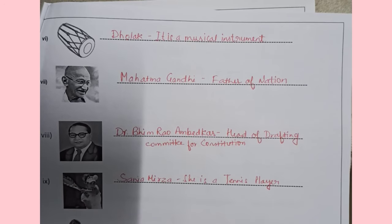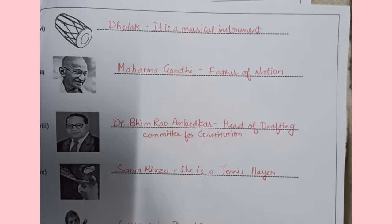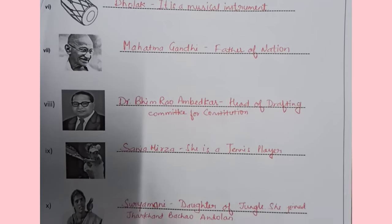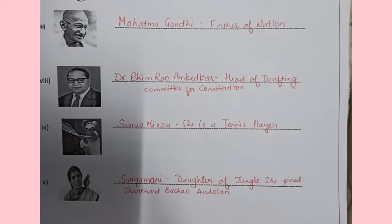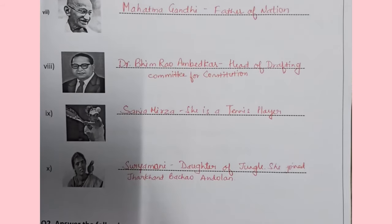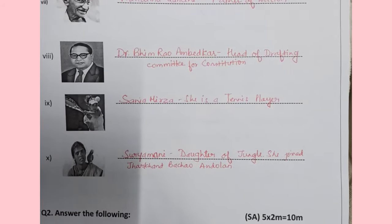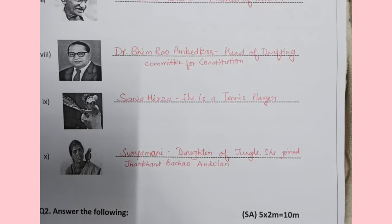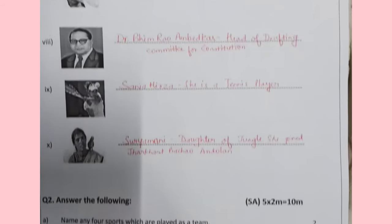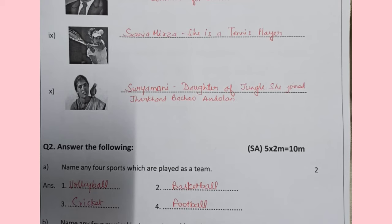This is a picture of Mahatma Gandhi, the Father of the Nation. Dr. Bhim Rao Ambedkar was the head of the drafting committee for the Constitution. This is Sania Mirza — she is a former tennis player. She is Suryamani, daughter of the jungle, who joined the Jharkhand Bachao Andolan. Moving towards the next question.